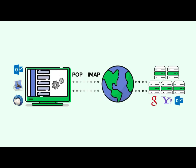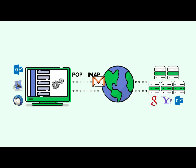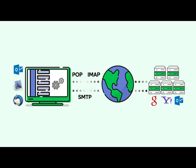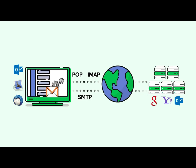The incoming server setting tells the email client where it can retrieve your email from, and the outgoing mail server setting tells the email client where it can send your email to. The outgoing server setting is also known as the SMTP server setting.